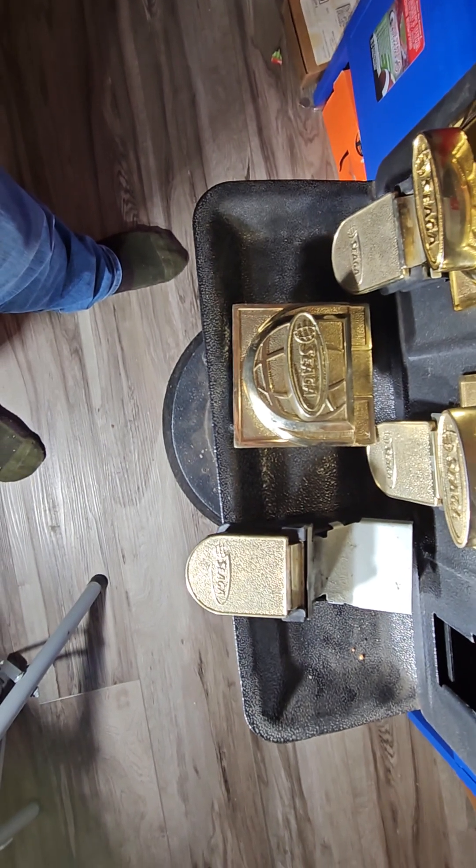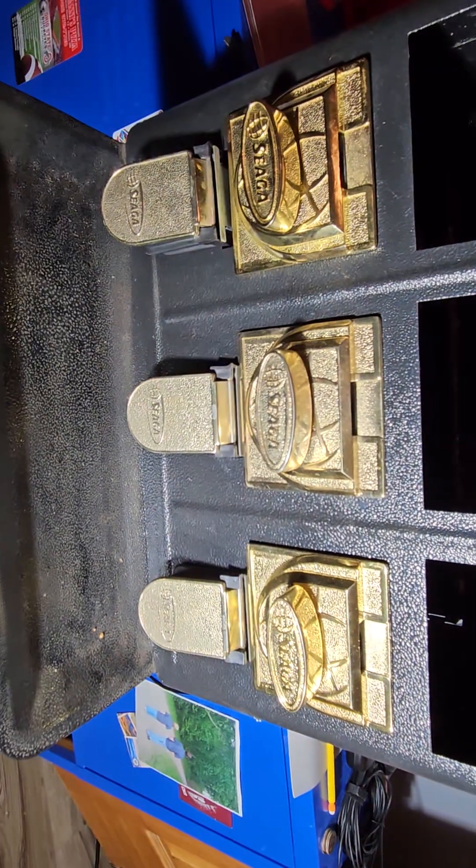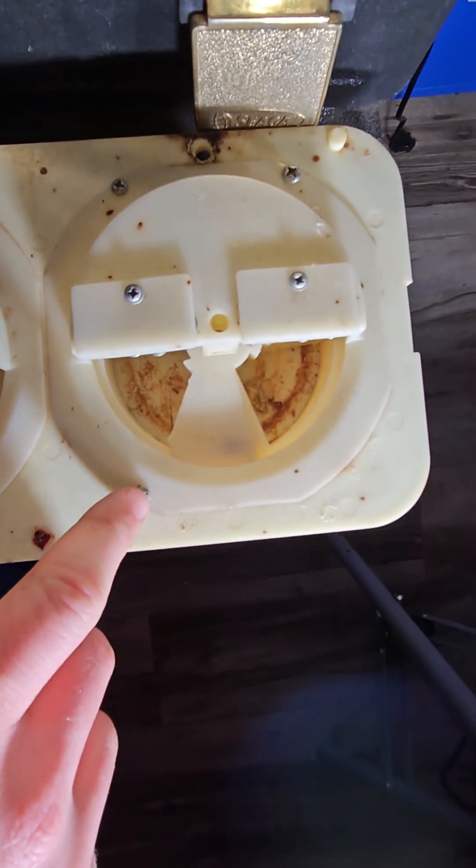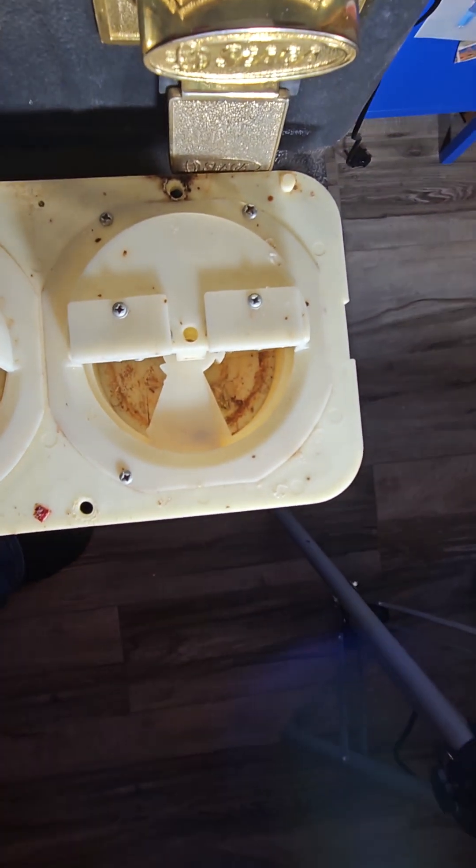All right, there's those all taken out. All right, all those are installed. All right, now for the candy wheels, we're just going to take these screws out with the phillips screwdriver. Take the candy wheel out.